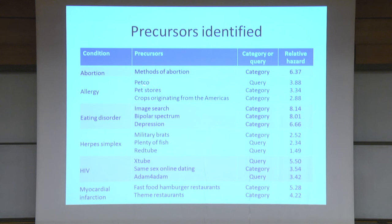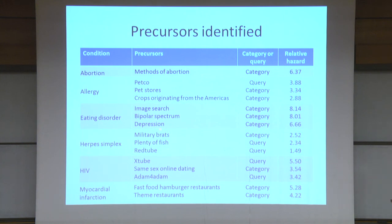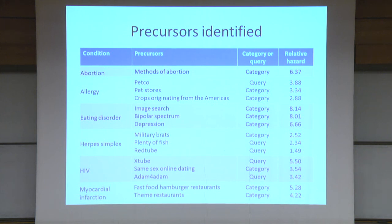One precursor is a query for a pet store, and the other is just the general category of pet stores. You can see that they have a relative hazard which is quite large, and it's well known that having pets in the house is a risk factor for allergy. There may also be a food-borne allergy factor here. For eating disorders — for example, anorexia — image search is a precursor condition, and this is well known: people with anorexia tend to start their disease by looking at these images. Looking at STDs, for herpes, two of the queries relate to a porn site and a dating site respectively. Going back to our question from before, we actually showed that this is true — dating sites are a risk factor for certain STDs.